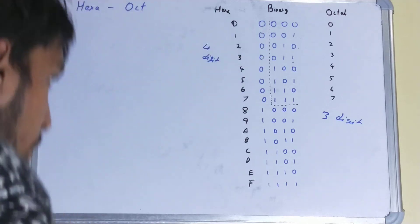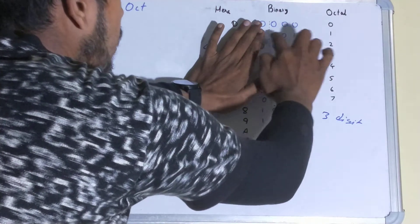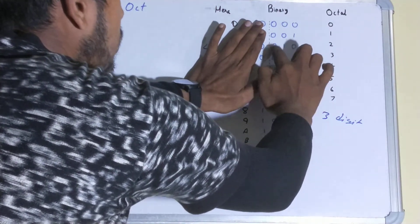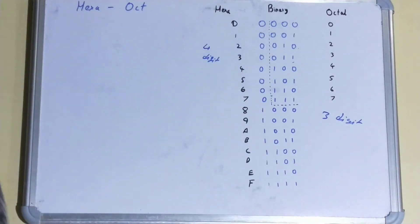If you want to see the octal equivalent of your binary then for zero you can write triple zero, for one you can write zero zero one, for two you can write zero one zero, for three zero one one, and for seven triple one. So I guess you are clear with your hexadecimal, octal, and binary.